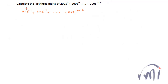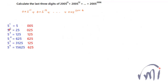If I write down the powers of 5, I actually get a pattern. 5 to the power 1 is 5 and the last three digits are 005. 5 to the power 2 is 25 and last three digits are 025. 5 to the power 3 is 125. 5 to the power 4 is 625 where last three digits are 625. 5 to the power 5 gives us 3125 where last three digits are 125. 5 to the power 6 is 15625 where last three digits are 625.